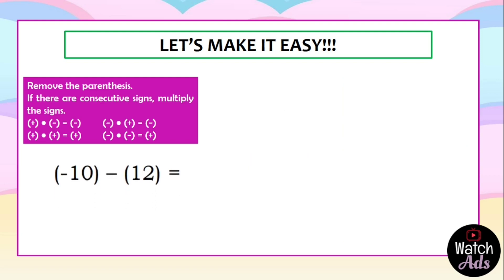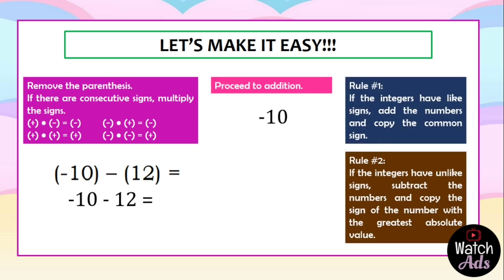One more example: negative 10 minus 12. We remove the parenthesis — we have negative 10 minus 12. No consecutive signs — we proceed to addition. Negative 10 and negative 12 have the same sign. We add the integers and copy the common sign. The answer is negative 22.